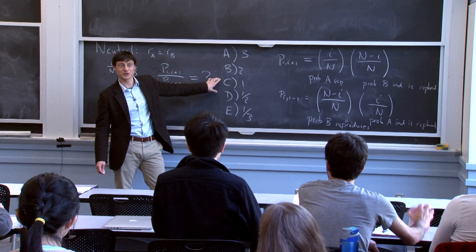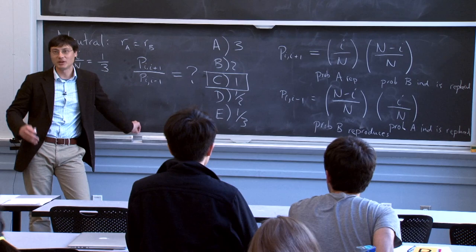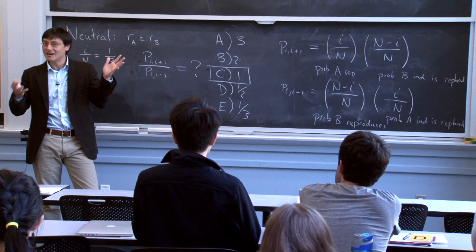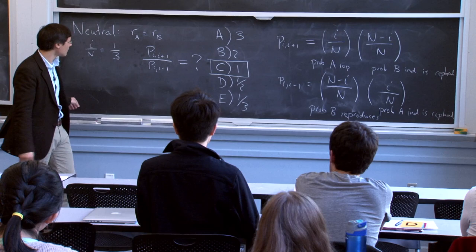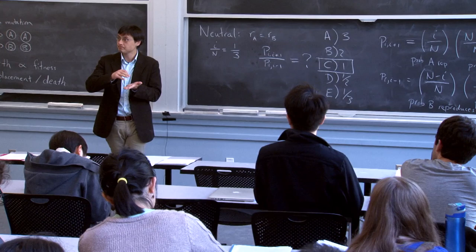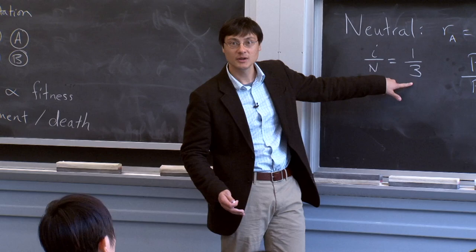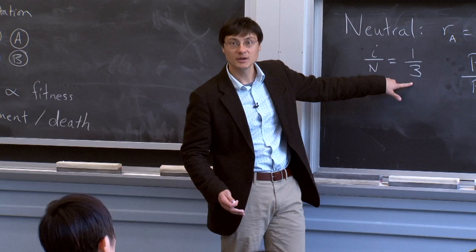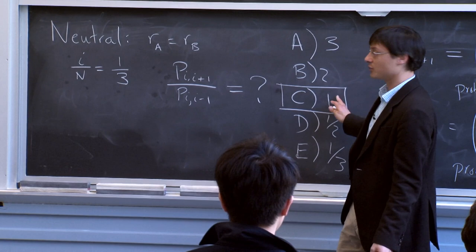Here's the random walk in i-space, number of A individuals, ranging from 0 to N. Starting at some i, we are more likely to fix B if i is less than N/2. But the first step is equally likely to go up or down — it's a random walk. Once i hits 0 or N, those are absorbing boundaries and you stay there.